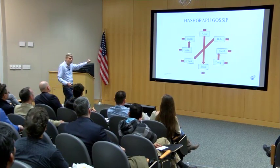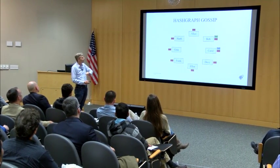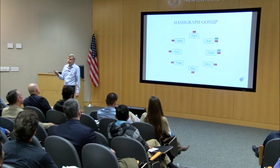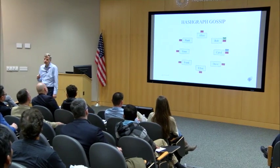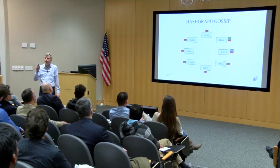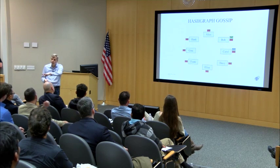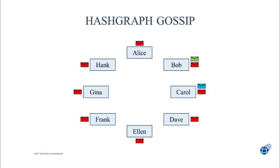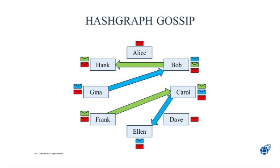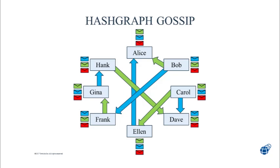What happens if two people want to send a message at the same time? In a traditional distributed database, you'd use two-phase commit, locks, or a leader — forcing them to take turns. But that's slow. The fastest way is the simple approach: Bob and Carol both gossip simultaneously. Each message explodes outwards exponentially at the same time. You can never get faster than this on the internet. If all we're doing is spreading transactions with their signatures and timestamps, this is the minimum number of bytes we'll ever need to send — the baseline for any replicated information store.